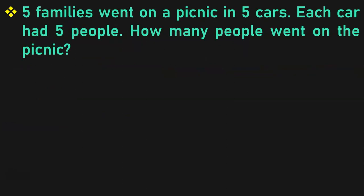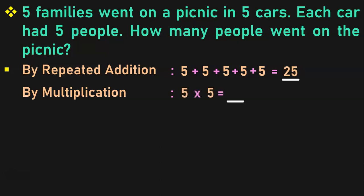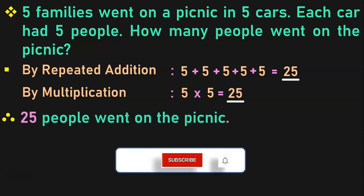5 families went on a picnic in 5 cars. Each car had 5 people. How many people went on the picnic? By repeated addition method, we have 5 groups — that is 5 cars — and in each car we have 5 people. So we have to add 5, five times: 5 plus 5 plus 5 plus 5 plus 5. 5 plus 5 is 10, 10 plus 5 is 15, 15 plus 5 is 20, 20 plus 5 is 25. Representing in multiplication: 5 groups of 5 items each, so 5 into 5 is equal to 25. Therefore, 25 people went on the picnic.